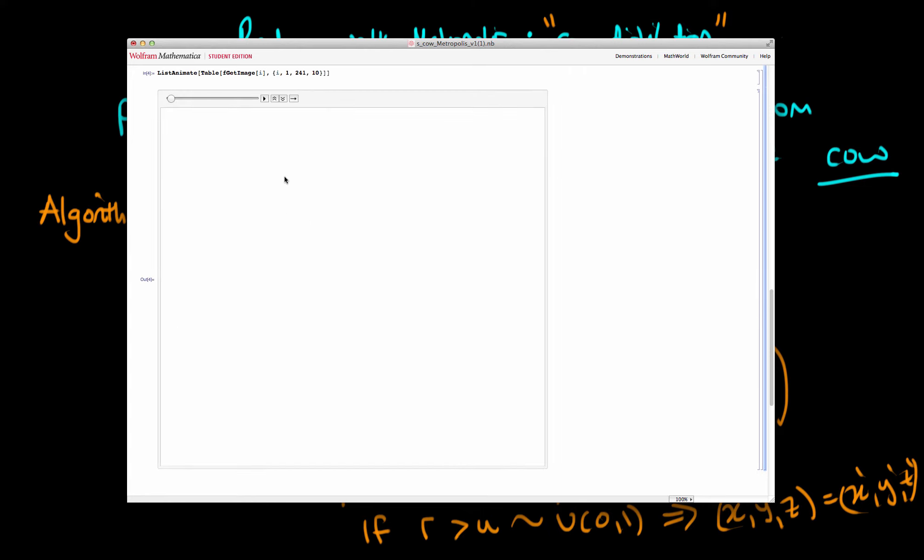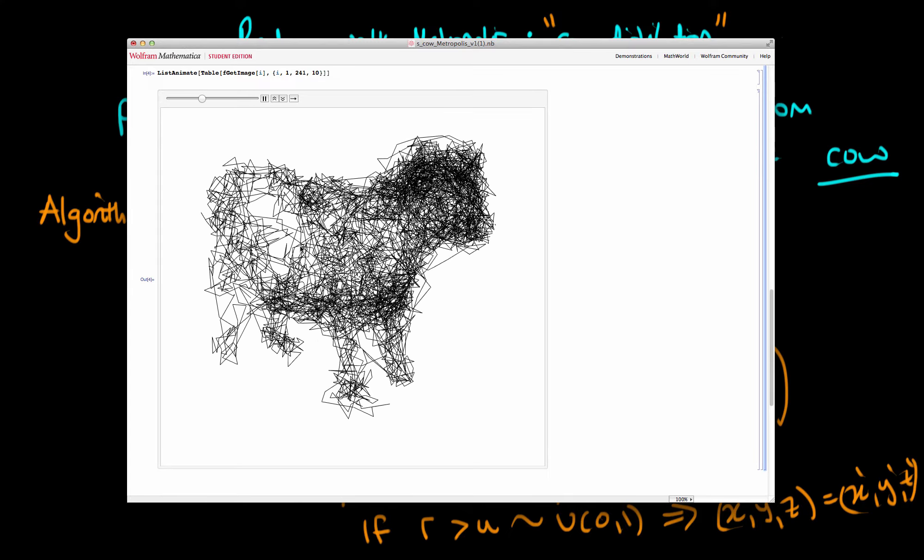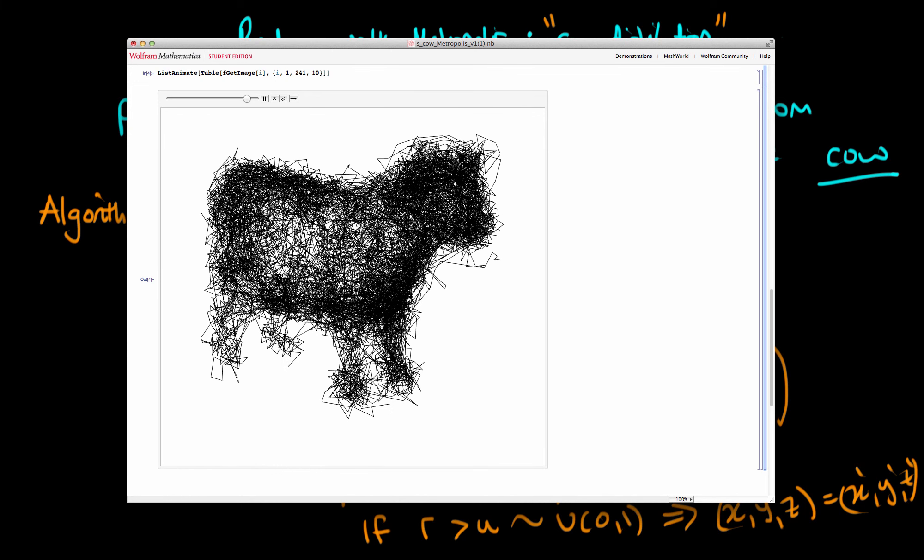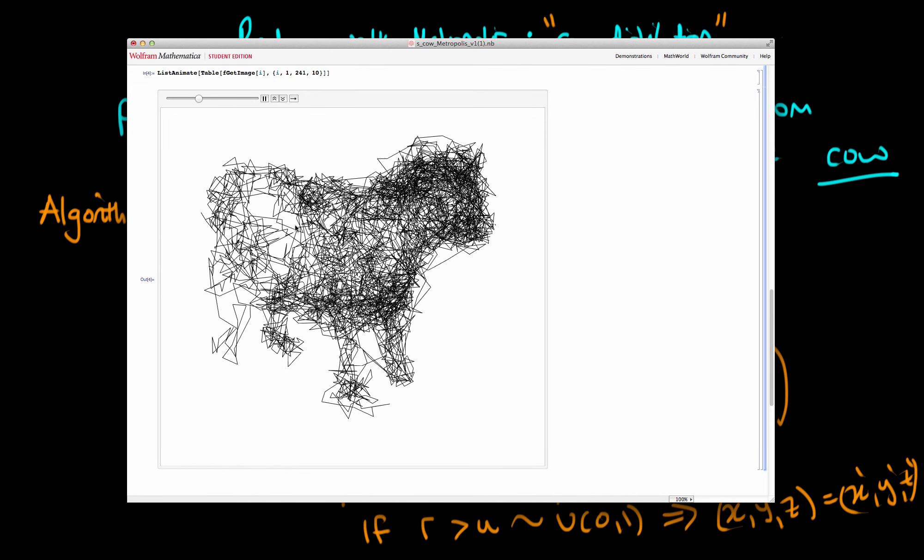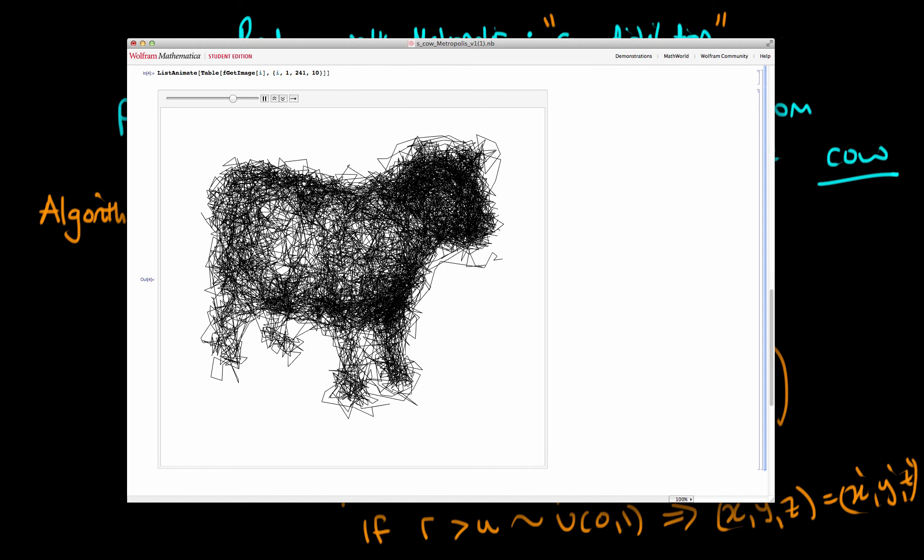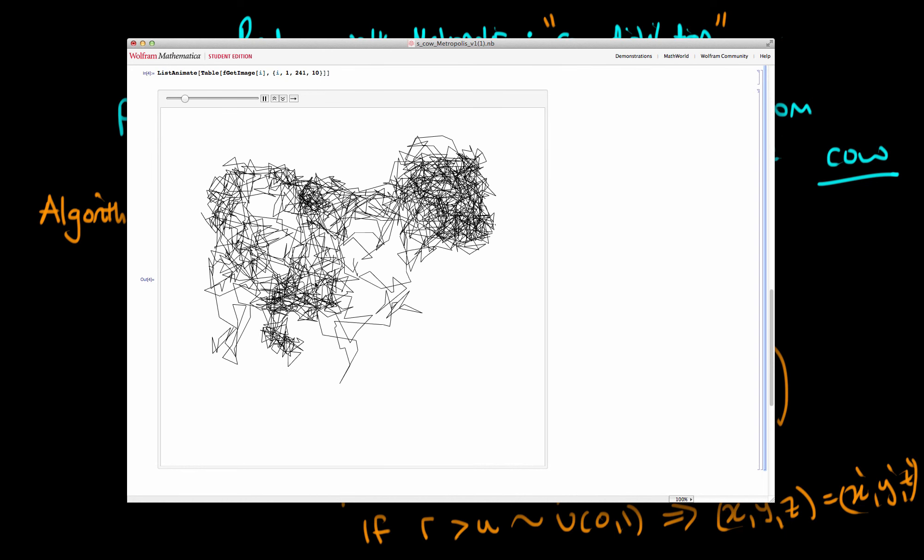Now I want to show you the results of using the random walk metropolis algorithm to sample from this distribution. And as we run this, what we see is that after about 6,000 iterations, our sampling distribution starts to resemble the surface of the cow very well.